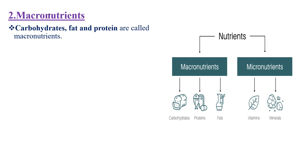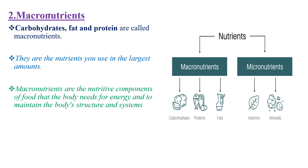Macronutrients are carbohydrates, fats, and protein. They are called macronutrients because they are the nutrients we need in the largest amounts. Macronutrients are the nutritive components of food that our body needs for energy and to maintain body structure and systems. Those are the most common forms of classifying nutrients. Thank you for watching.